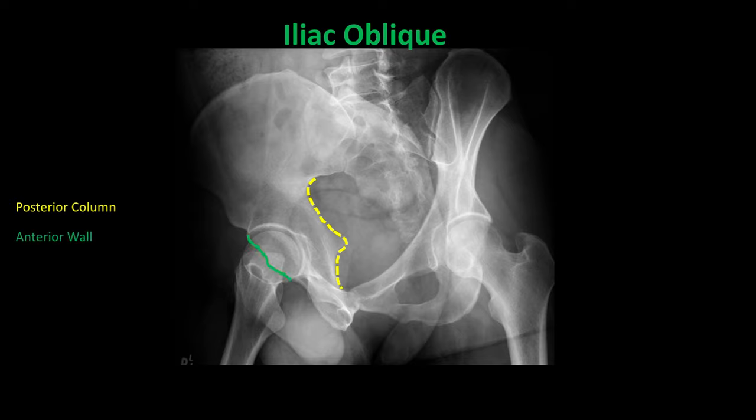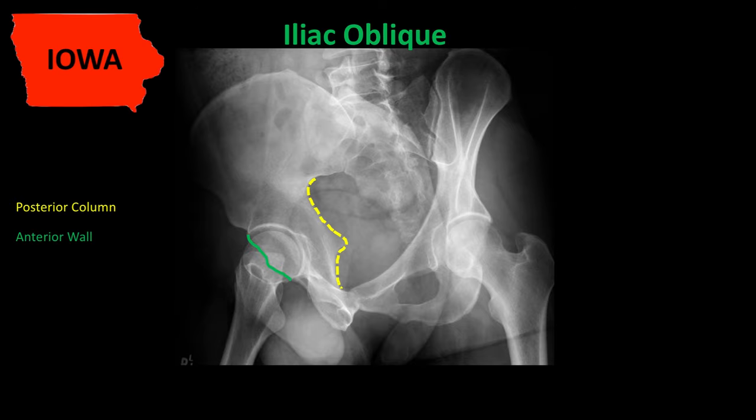This can be remembered using the mnemonic Iowa — iliac oblique, wall, anterior. The iliac oblique best shows the anterior wall, and the obturator oblique shows the opposite. This will help you keep things straight.